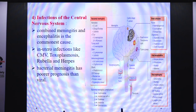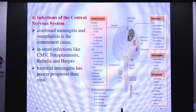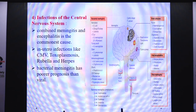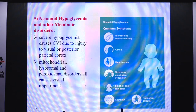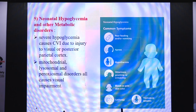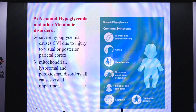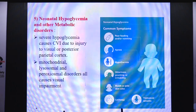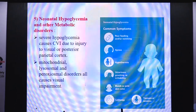Infections of the central nervous system also contribute to CVI. Combined meningitis and encephalitis is the commonest cause. In utero infections like CMV, toxoplasmosis, rubella, and herpes also contribute. Bacterial meningitis always has poorer prognosis than viral. Neonatal hypoglycemia and other metabolic disorders have also been associated with CVI. Severe hypoglycemia causes CVI due to injury to the visual or posterior parietal cortex. Mitochondrial, lysosomal, and paroxysmal disorders also cause visual impairment.